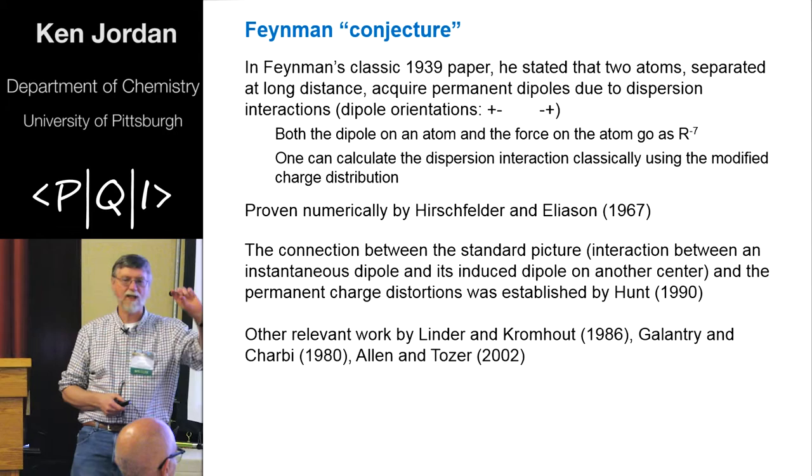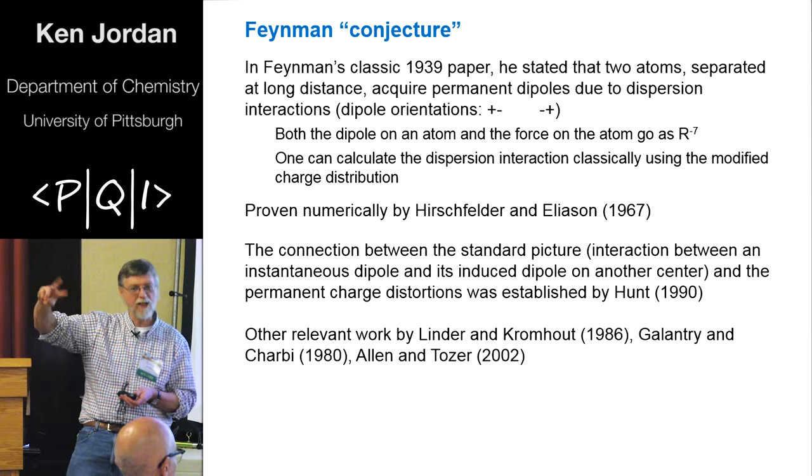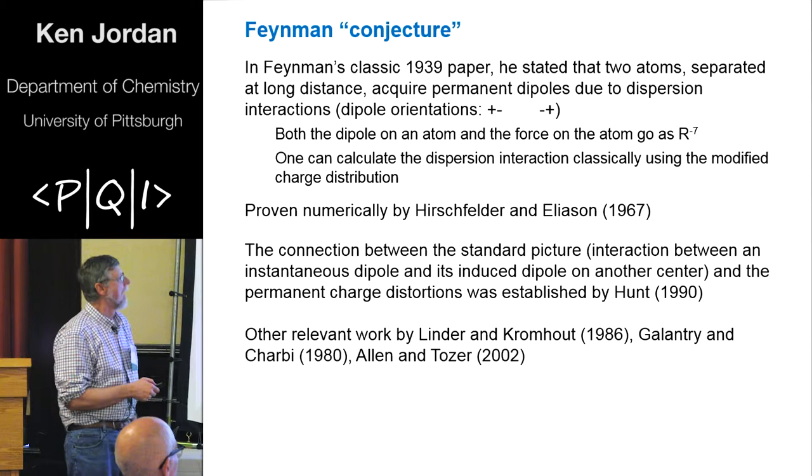The real proof of how this works was provided by Kathy Hunt in a very, really, at least to us, complicated paper involving non-linear response. But essentially what happens is there's a fluctuation on one atom that introduces a dipole. That couples with the dipole-dipole-quadrupole hyperpolarizability of the other atom. This is the nonlinear aspect. That's what generates the permanent dipole on the other atom. Not a single mention of this in Feynman's thesis.